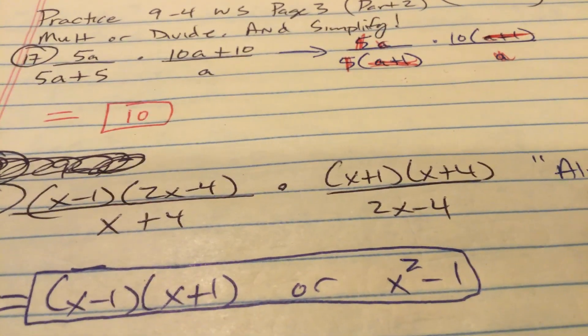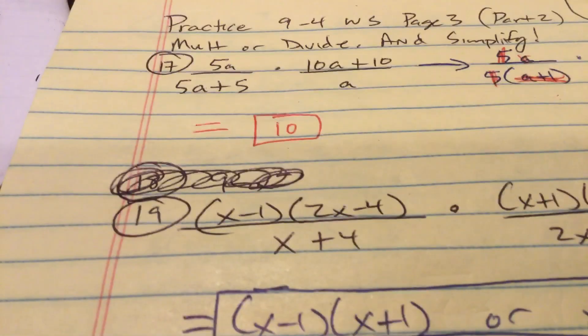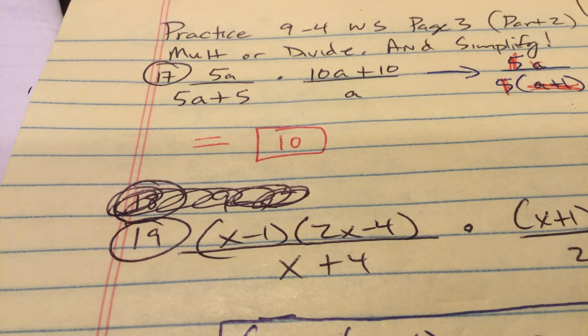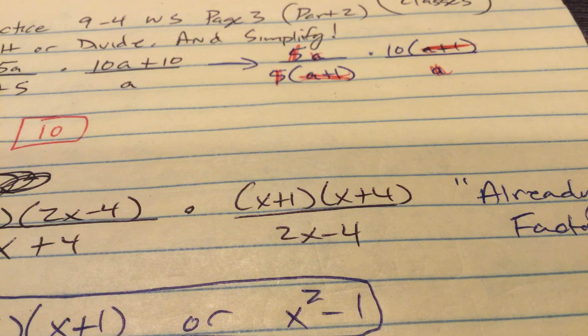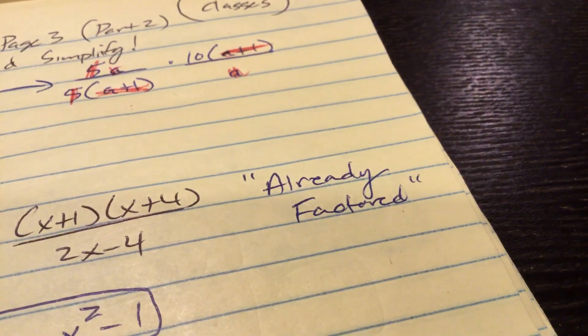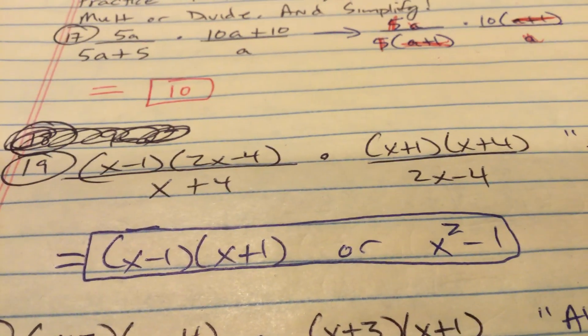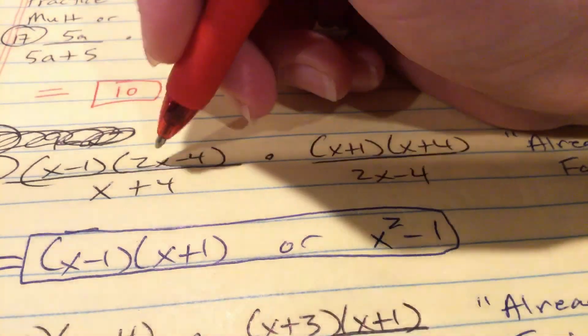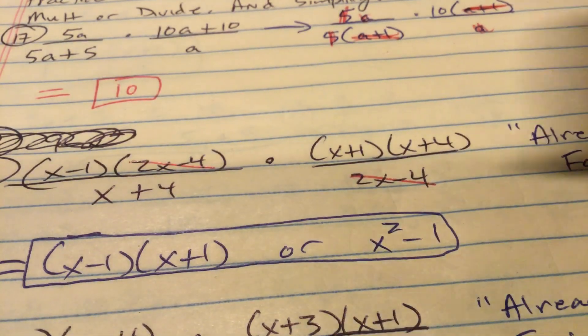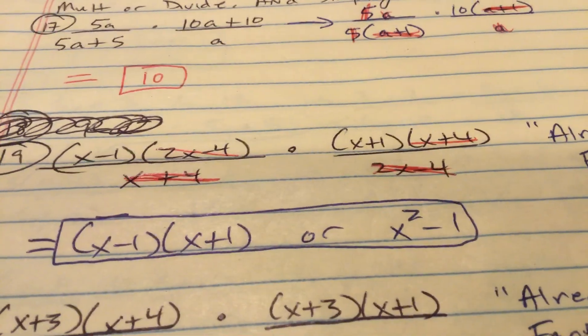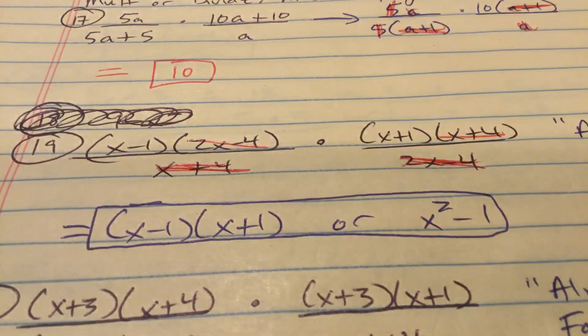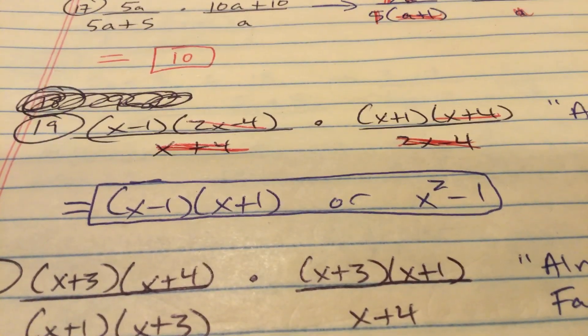Number 19 is this. You can't see it all. So the first fraction is x minus 1 times 2x minus 4 over x plus 4. The second fraction is x plus 1 times x plus 4 divided by 2x minus 4. Well, everything's already factored. So I have what? What do I have in common? I have a 2x minus 4 up top and down south. They cancel. I have an x plus 4 up top and down south. So notice that everything in the denominator is gone. What remains is x minus 1 times x plus 1. If you FOIL that out, that is x squared minus 1. Either of those answers is good for me.